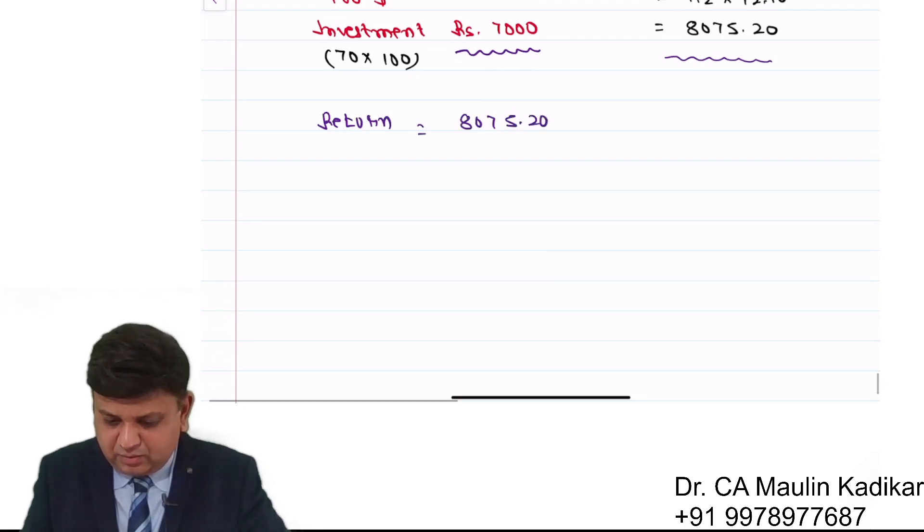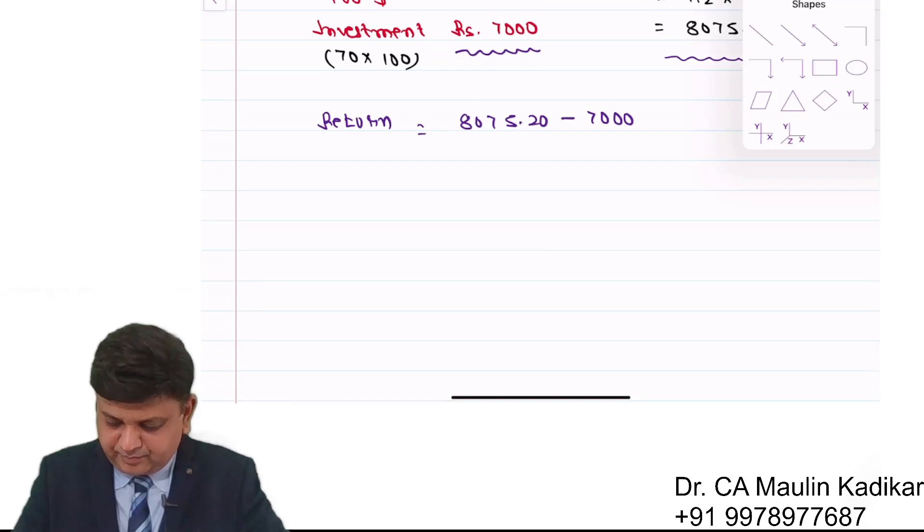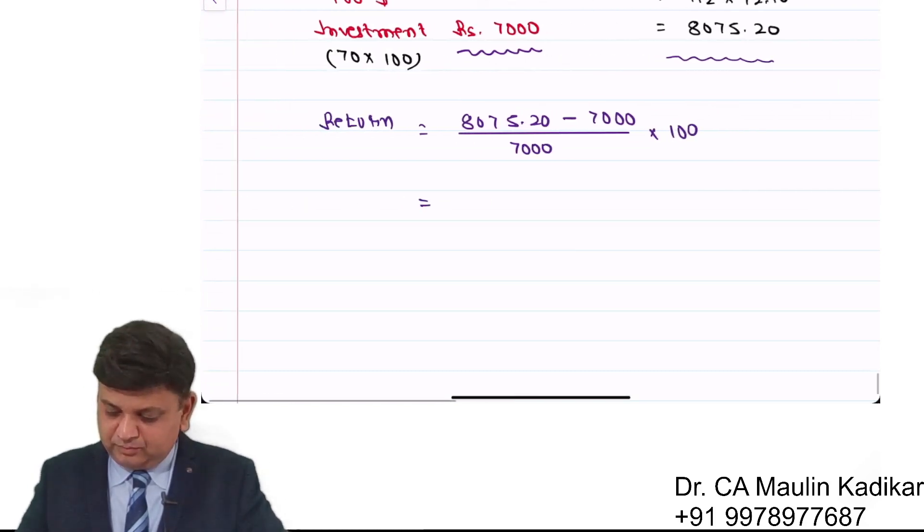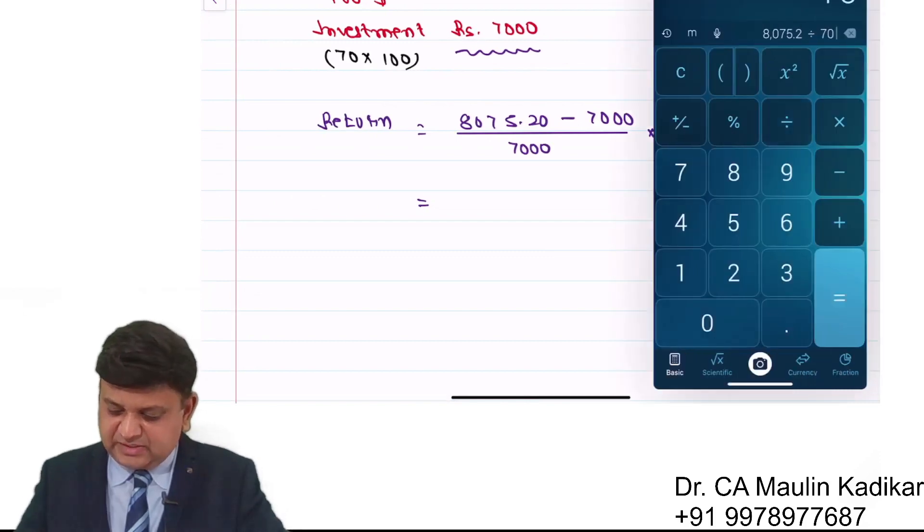So return will be 8075.2 minus 7000 divided by 7000 into 100 for getting answer in percentage. So we understand, divided by 7000 minus 1 into 100.